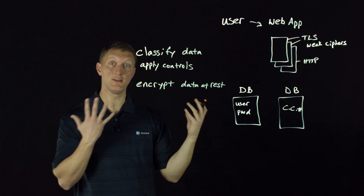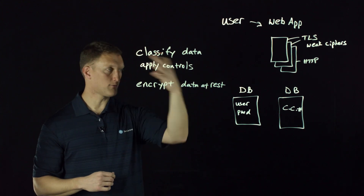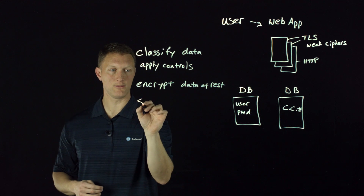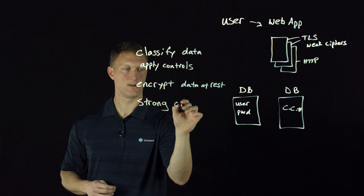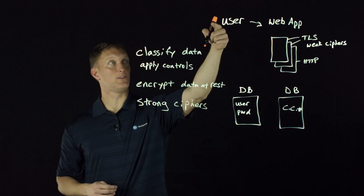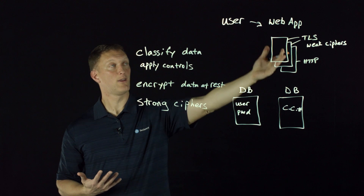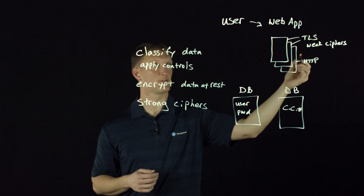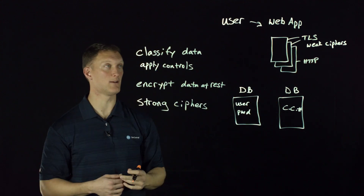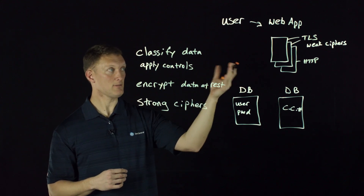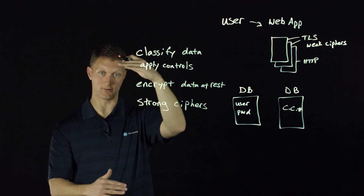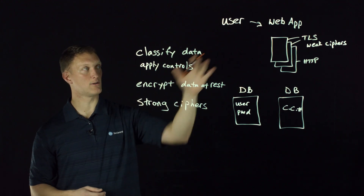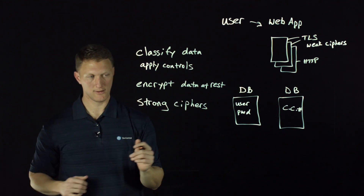Make sure you encrypt sensitive data at rest with strong encryption, so that if anyone ever gets that file, the data is encrypted. The other thing you need to use is strong ciphers. This gets back to the connection experience the user has with your web application. That connection needs to be protected with TLS encryption and you need to make sure you use strong ciphers as you build out that TLS connection with your end user. If you use weak ciphers or have any weak cipher in your cipher list, that exposes you to problems. The web server gets to determine what ciphers are used in that TLS connection.